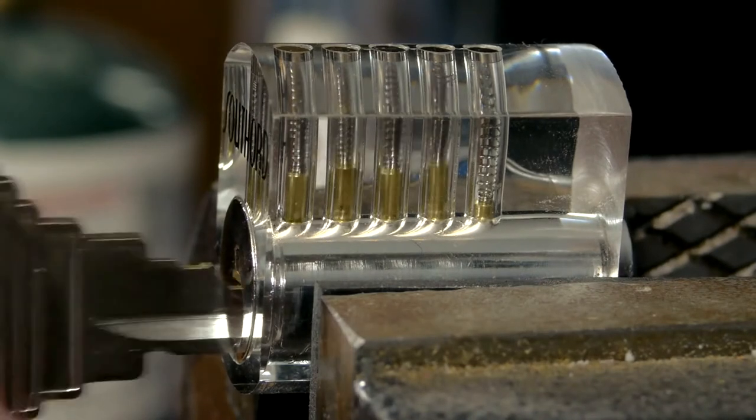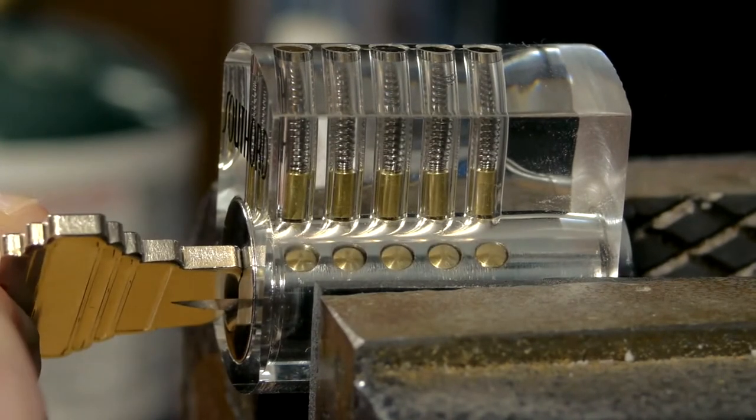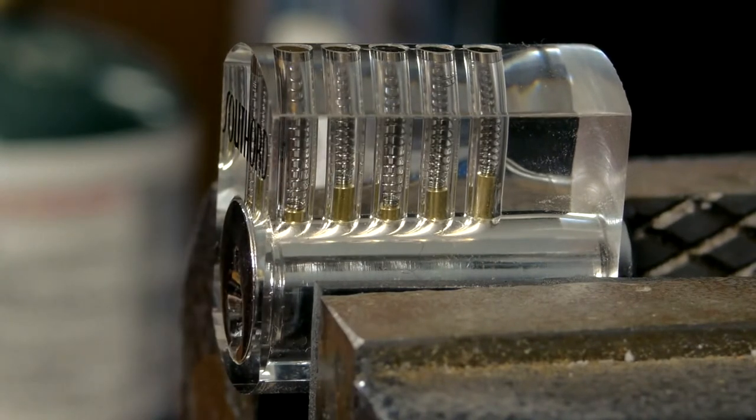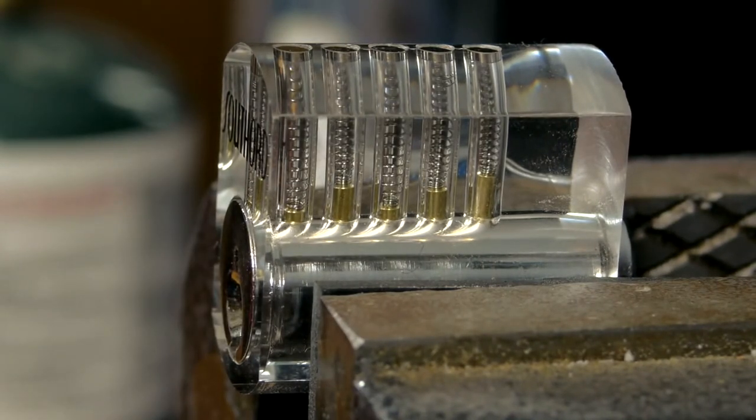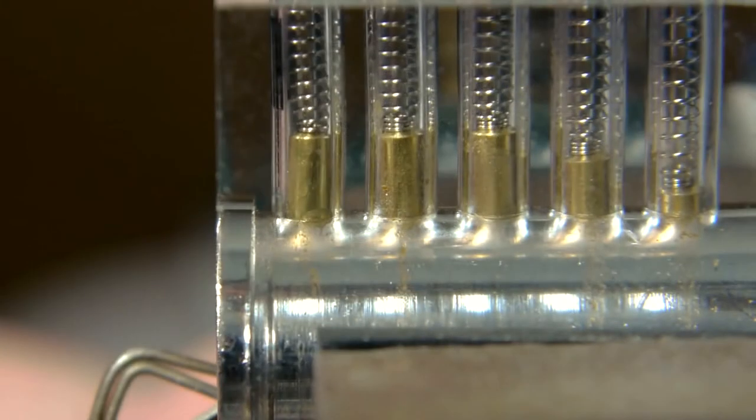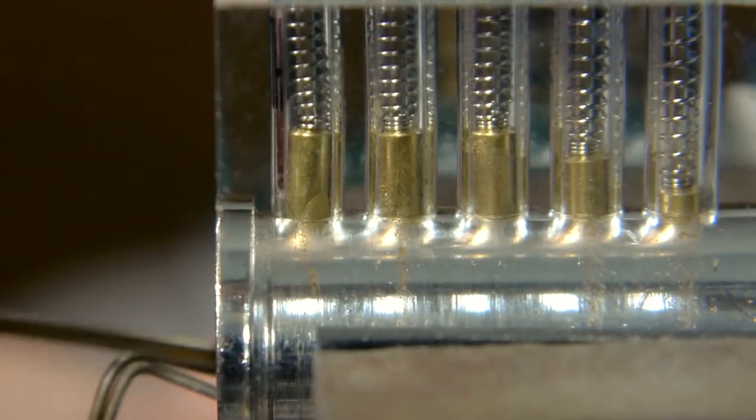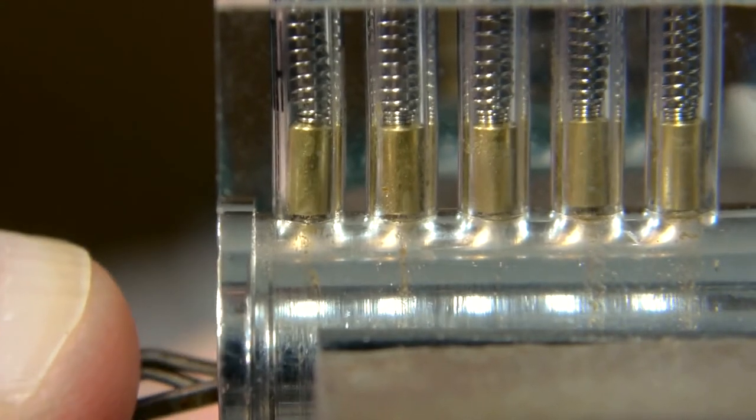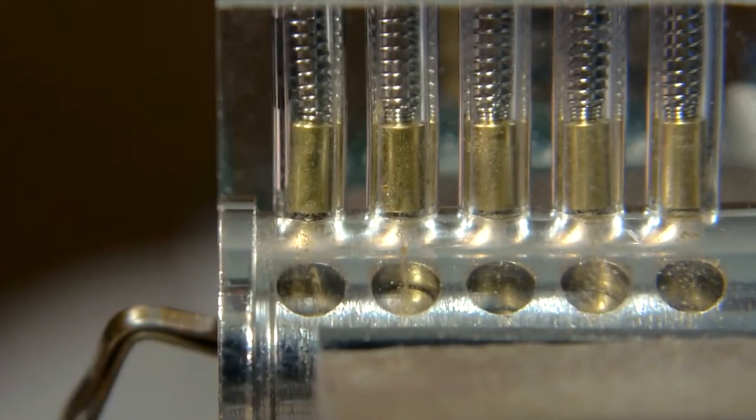In this video, I used a transparent practice lock so you could see what I'm doing on camera, and there are a number of other practice locks like this that can be purchased online. For this skill to be of any use in a real situation though, it's important to be able to identify and adjust seized pins by feel and sound alone, as real locks don't usually come with transparent sides.